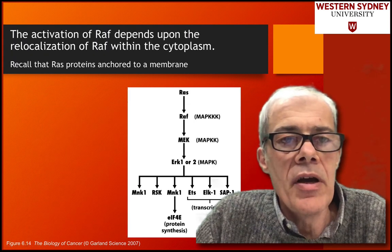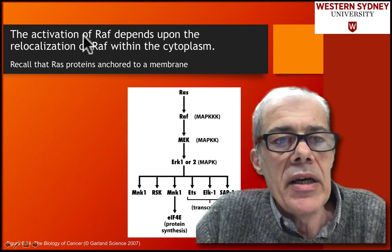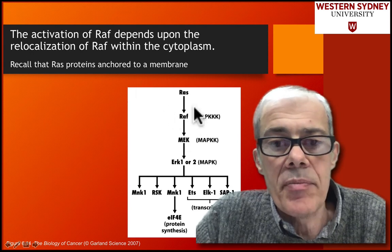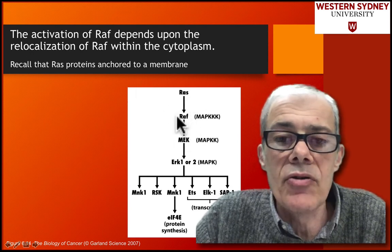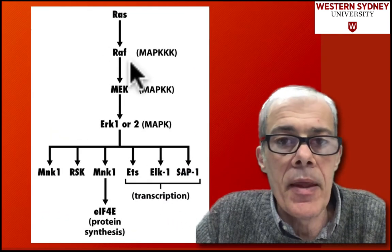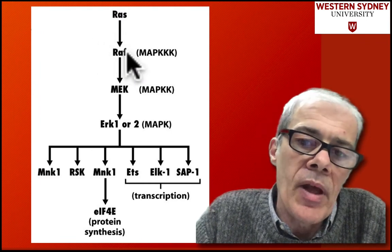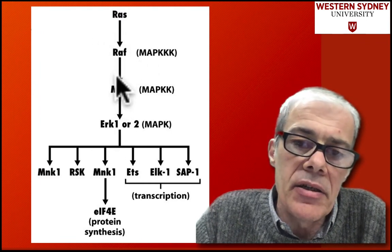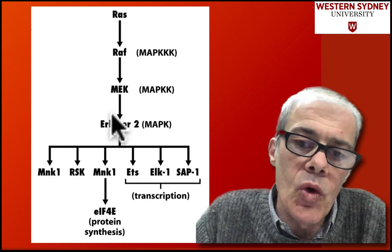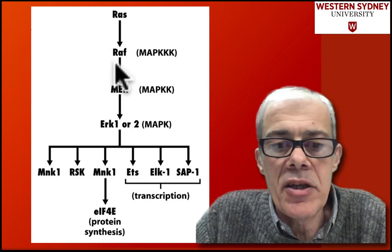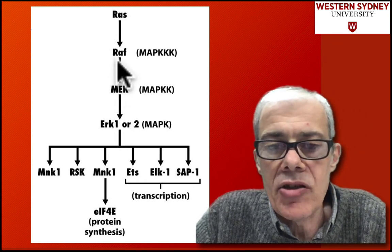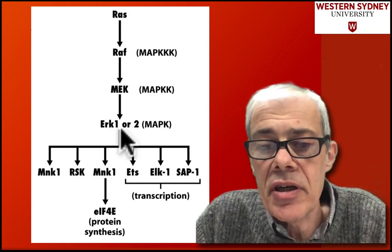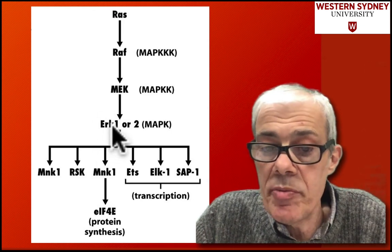The first thing we're going to look at is the activation of the RAF protein — not RAS, but RAF. Now RAF, MEK, and ERK form a pathway, and this pathway leads directly to the activation of gene expression because ERK is a transcription factor.